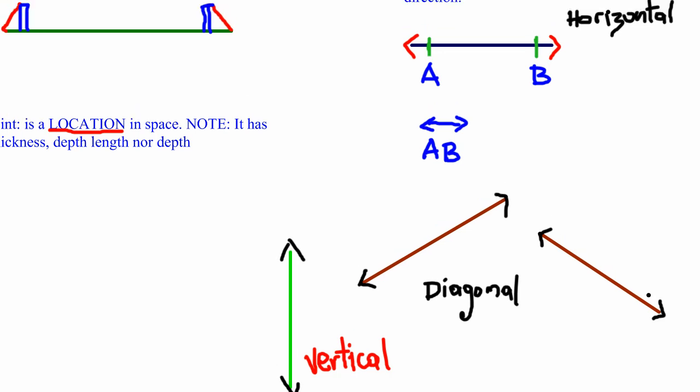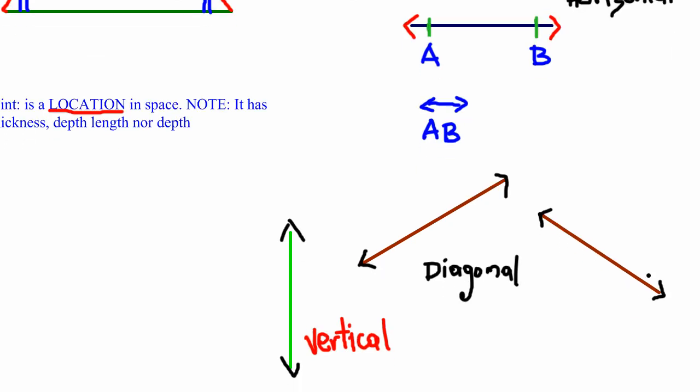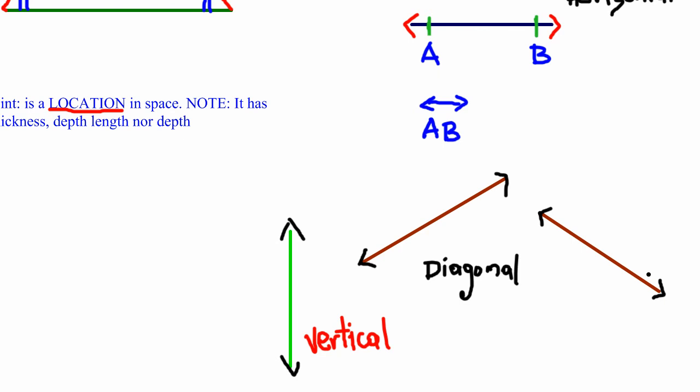To sum it up, we have three types of lines: a horizontal line runs from left to right; a diagonal line slopes downward from right to left or left to right; and a vertical line runs from top to bottom.